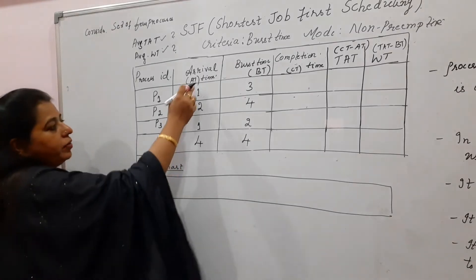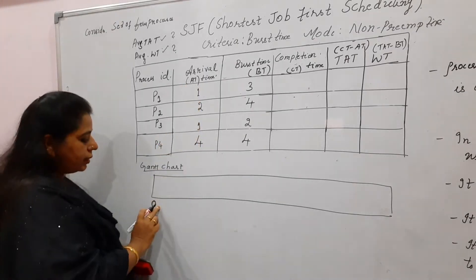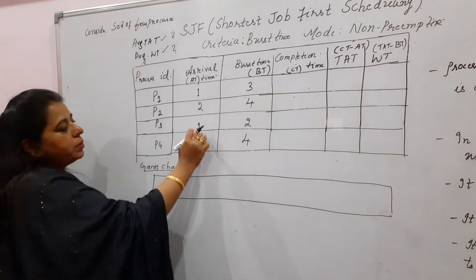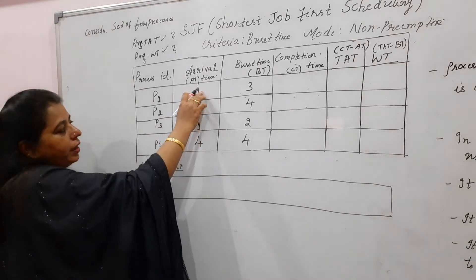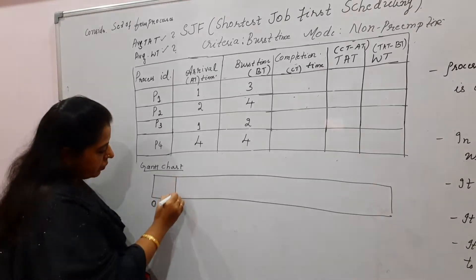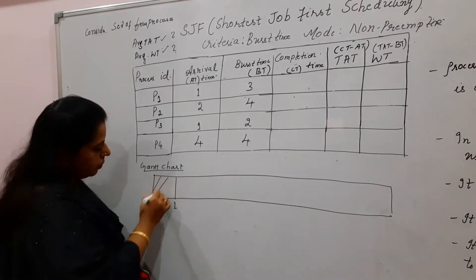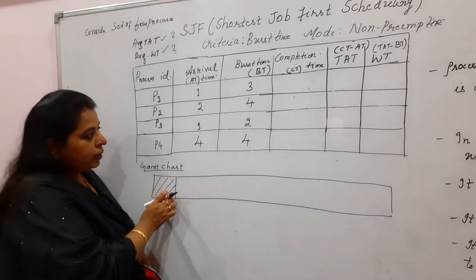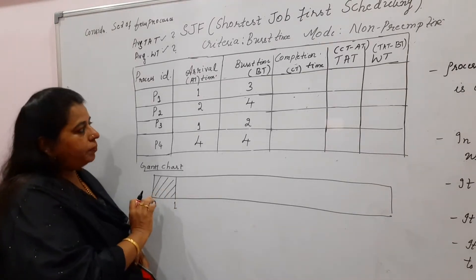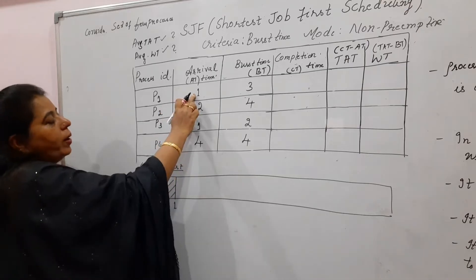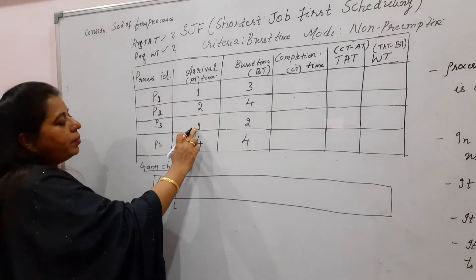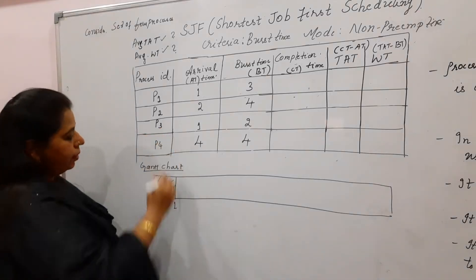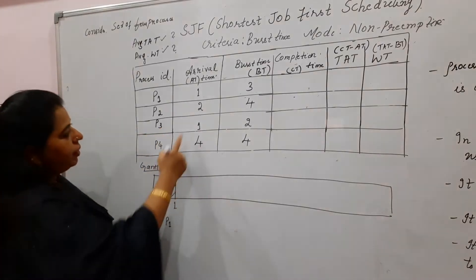Start with 0. Looking at the arrival time, no process has arrived at 0 units. So keep it vacant — from 0 to 1, nothing is scheduled. Next, at time 1, there are two processes available: P1 and P3.